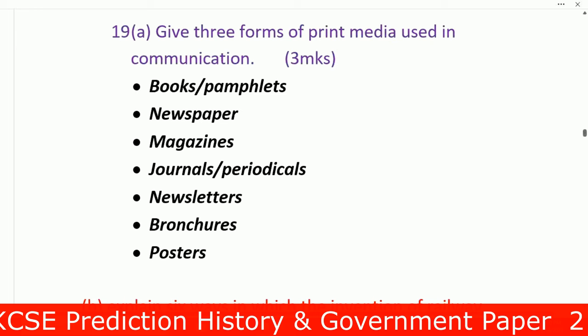Question 19: Give three forms of print media used in communication. Number one: books or pamphlets. Number two: newspapers. Number three: magazines. Number four: journals or periodicals. Number five: newsletters. Number six: brochures. Number seven: posters.